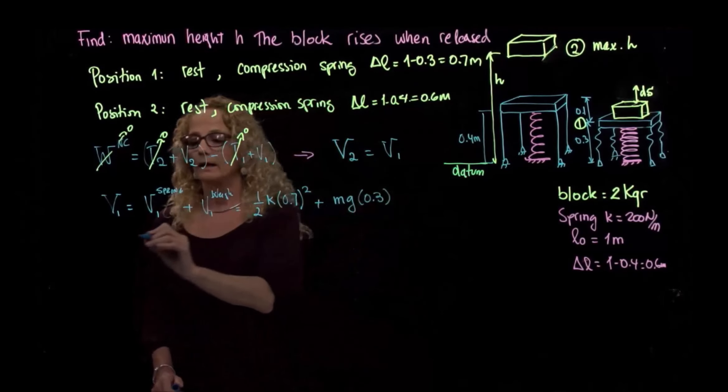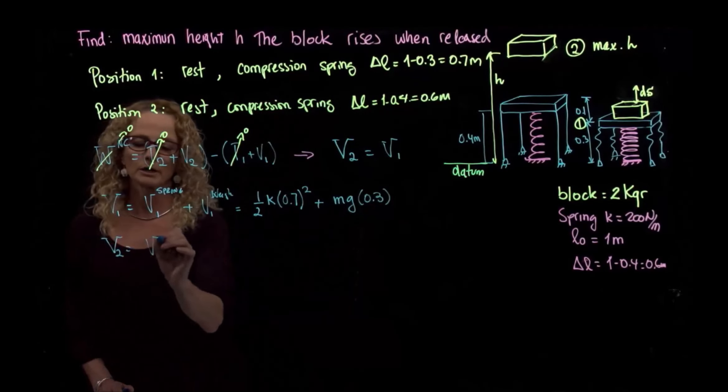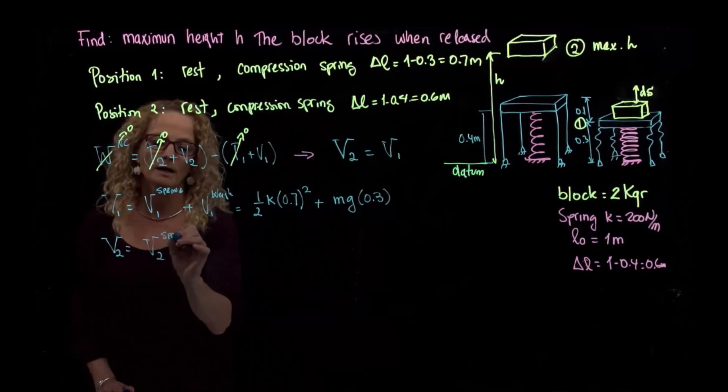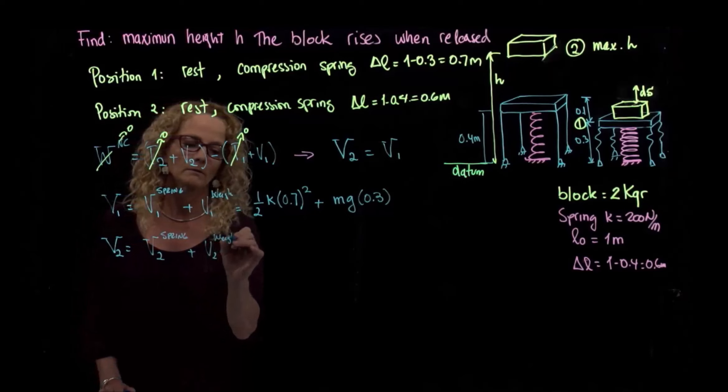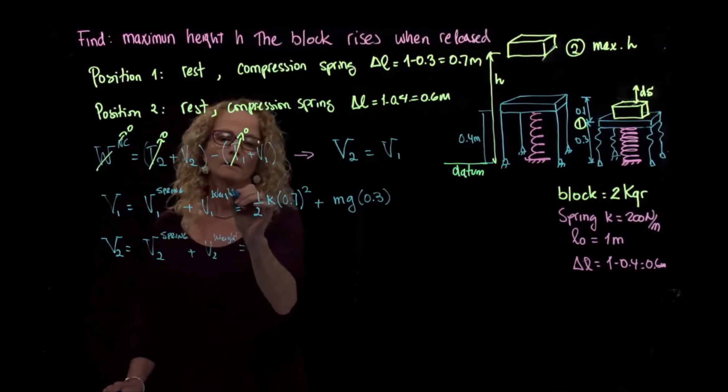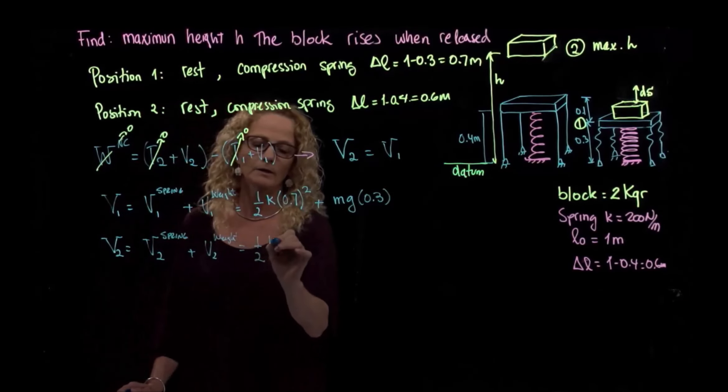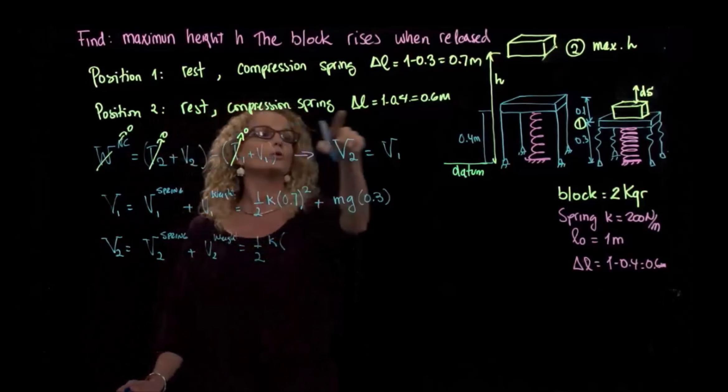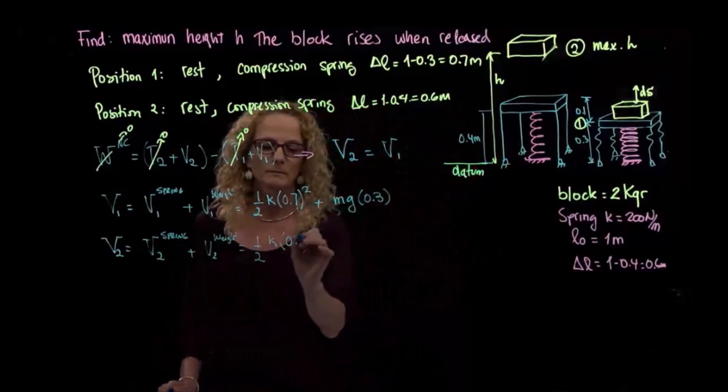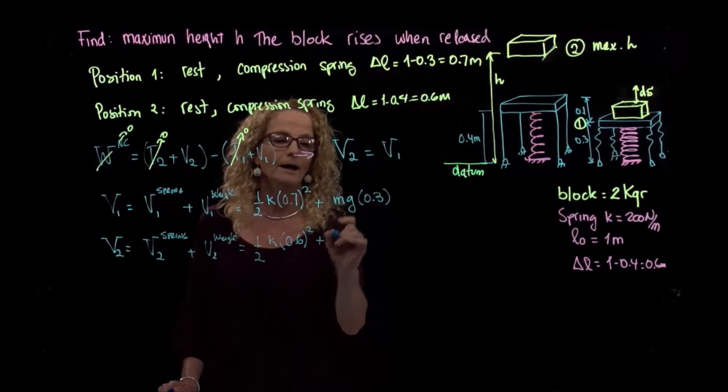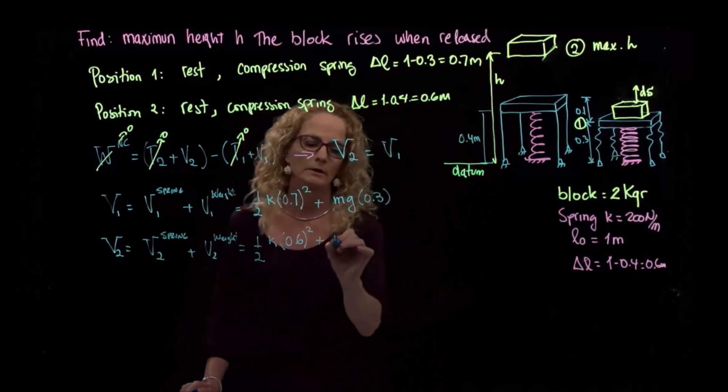And then my potential energy in the second position will also be the spring plus the weight. There will be one-half k. In position two, we said that the spring is compressed 0.6, and the total height is the one that we want to find.